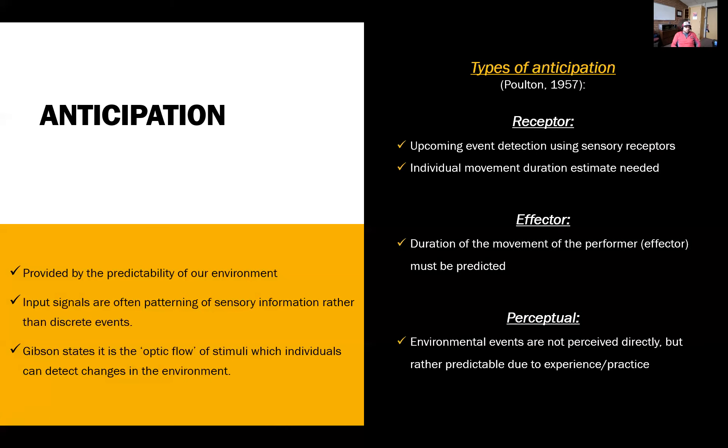We're going to talk about certain types of anticipation from the Poulton paper of 1957. A receptor is detection using some sort of sensory receptor, whether it's vision or auditory. This is provided with individual movement durations, which is more of what we're estimating. If I know that a certain task should take a certain period of time, then I can provide that temporal estimation.